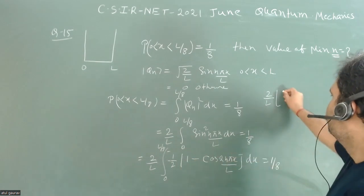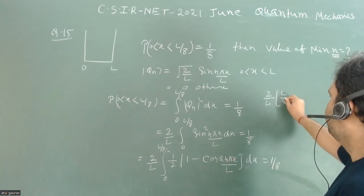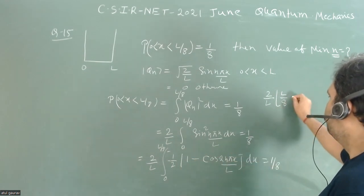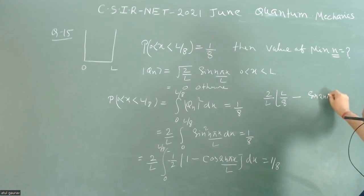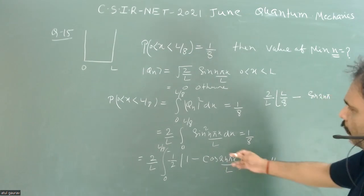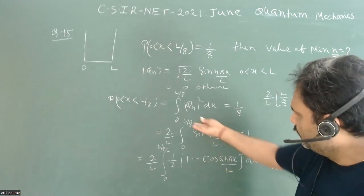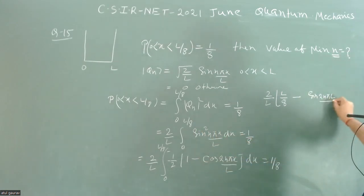Minus the integration of cos will be sine, so we have sin(2n*pi*x/L). We will put sine 0, which equals zero, so sine at L/8 we will put here, L/8 times L upon 2n*pi. And this value is equal to 1/8.